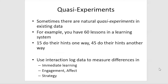Another big category is quasi-experiments. Sometimes we don't even need to do an A-B test — there are natural quasi-experiments in existing data where we can construct an experiment from what's already happened. For example, if a learning system has 60 lessons and 15 do their hints one way while the other 45 do hints another way, we can use interaction log data to measure differences in immediate learning, engagement, affect, and strategy. A quasi-experiment is never as conclusive as an A-B test, but it still provides useful information to improve our designs.